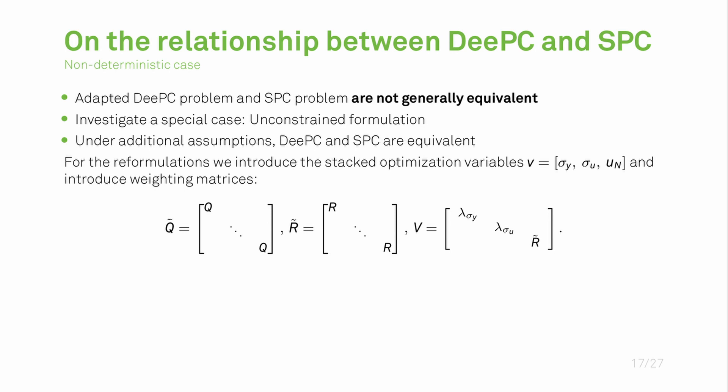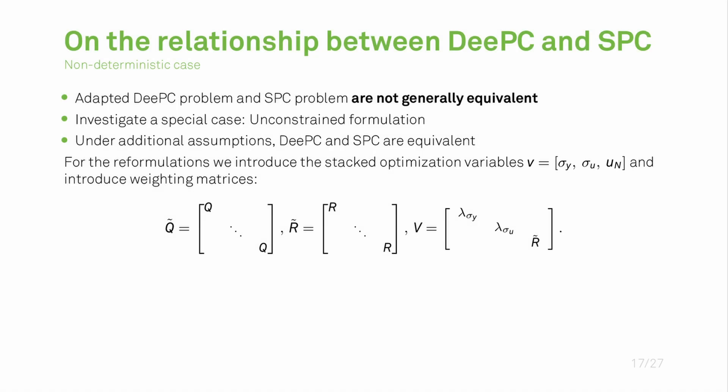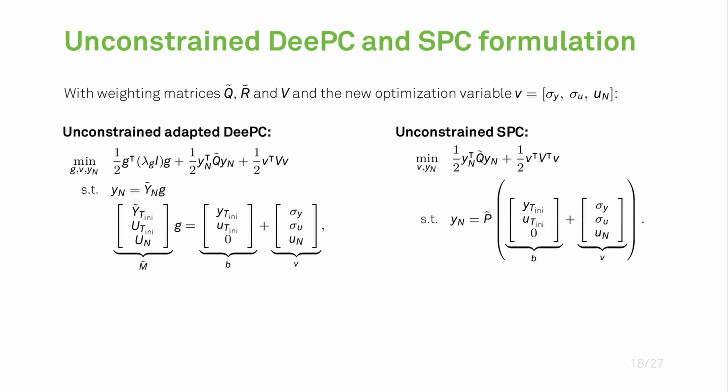For this purpose we introduce some new notation which essentially boils down to vectorizing the DeePC and the SPC problem. For this vectorization we introduce a new stacked optimization variable for both problems which we call v, and v is the stacked vector of sigma_y, sigma_u and q_N. Furthermore we need to introduce some block diagonal weighting matrices which are shown here at the bottom. With these preparations we are then able to formulate both problems as shown here. These problems are essentially the same as you have seen before except for the fact that they are vectorized and they do not have the inequality constraints anymore.